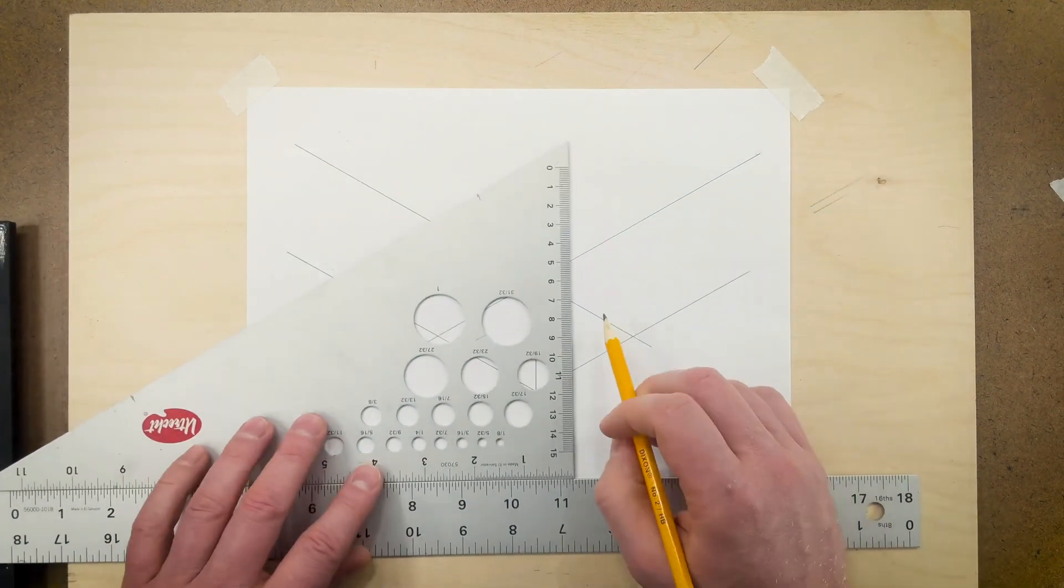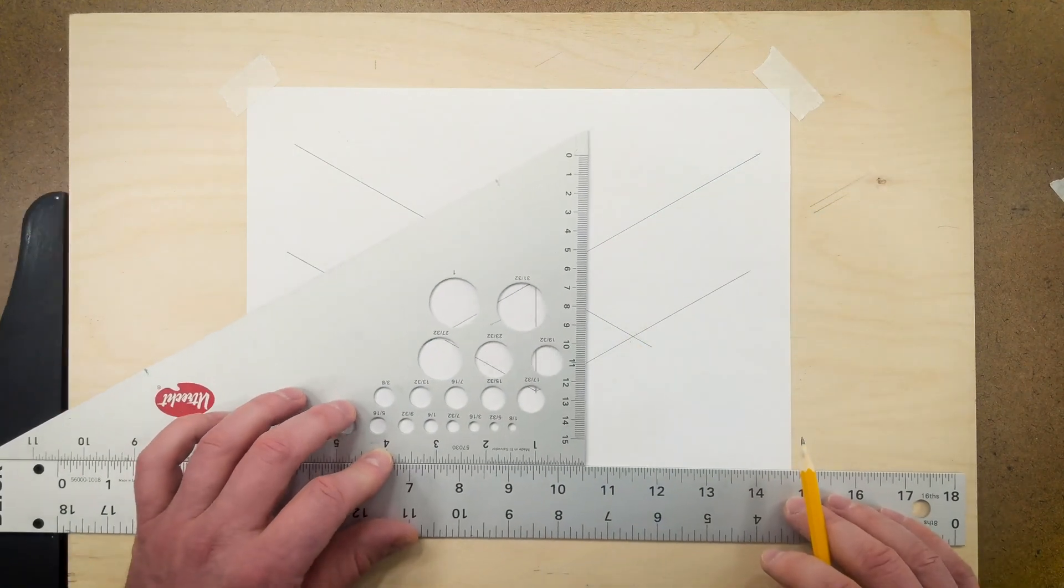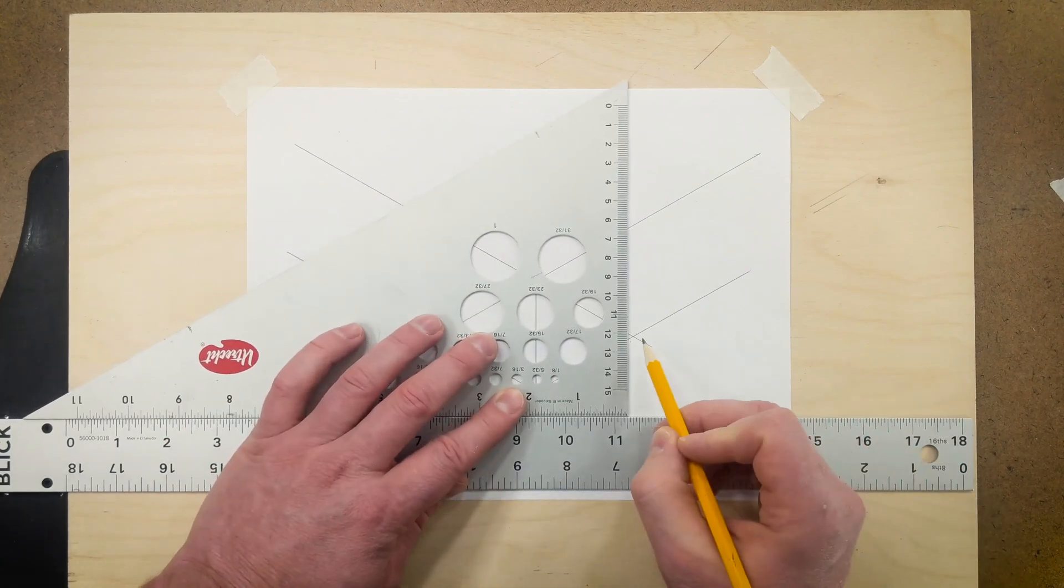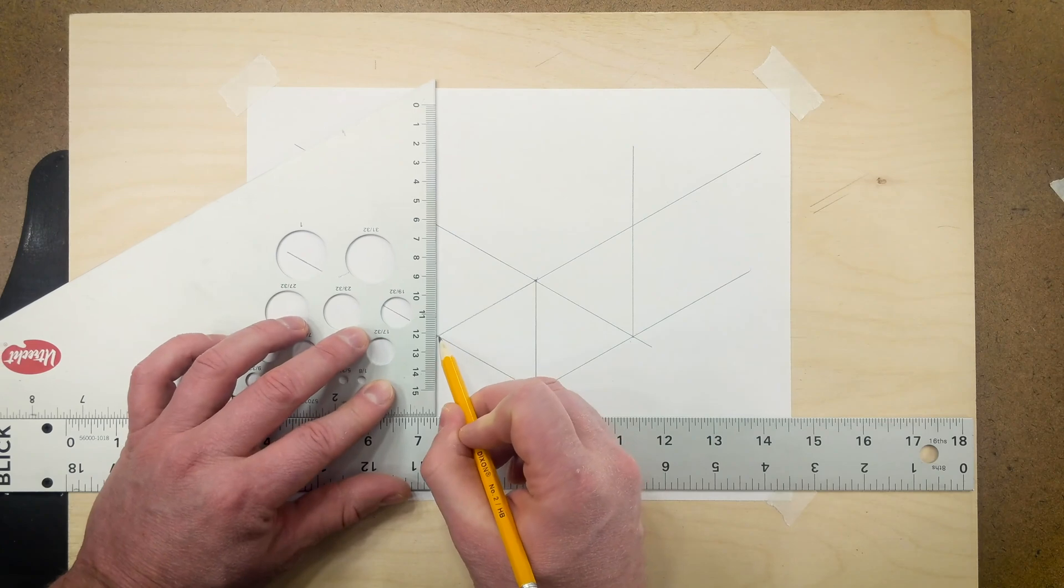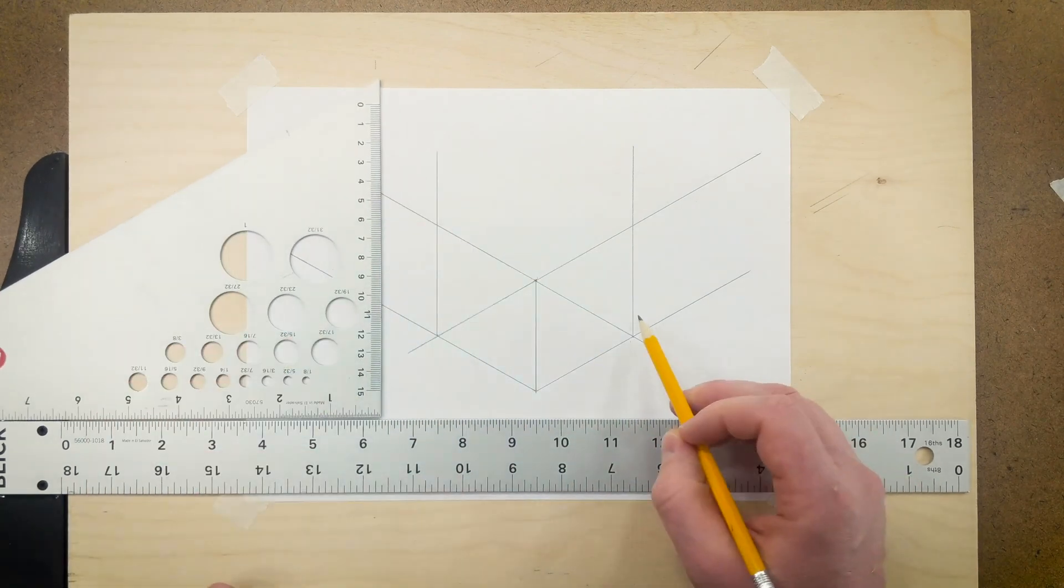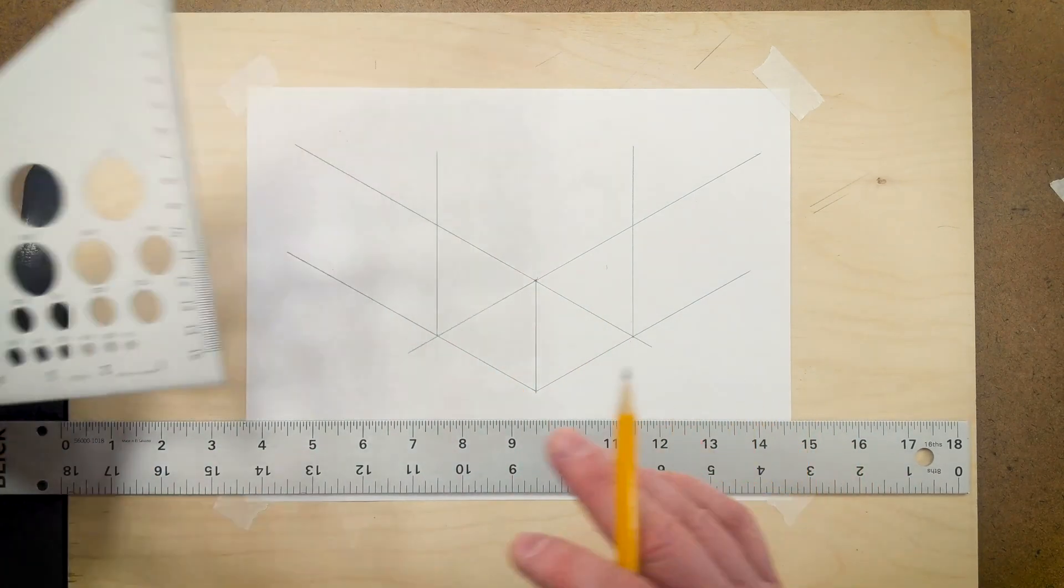You would draw these lines very light and you only need to make a mark on the corner rather than drawing the whole line. Then we can draw vertical lines from both of these marks and now you can start to see the two sides of our cube.